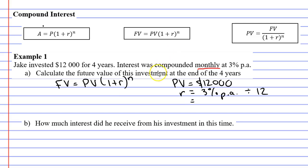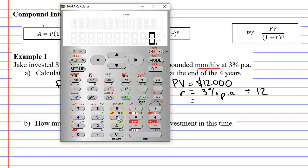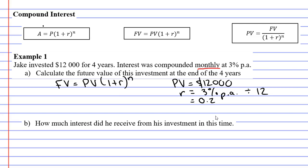What do we get when we do 3 divide 12? 3 divide 12 equals 0.25. So this is 0.25% per month. We've converted it from per annum or per year to per month.